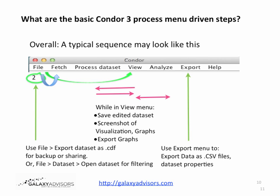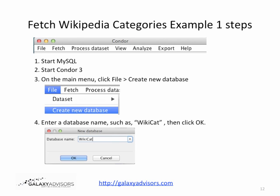You may also go back to the File menu and export the dataset as a Condor data file, or .CDF file — use it as a backup, share it with colleagues, or move it to another computer. Finally, you might use the File menu to restart, open that dataset, and use Condor's multi-function filtering to explore the graph by some initial filtering. Now let's begin looking at Fetch Wikipedia Categories examples step-by-step, or click-by-click.